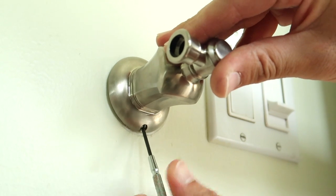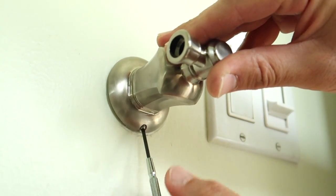We'll start by removing this bracket. Usually there's a screw underneath. Use a small flathead screwdriver.